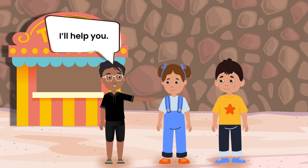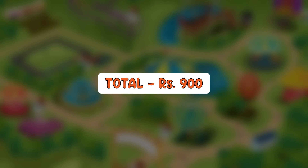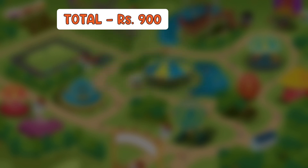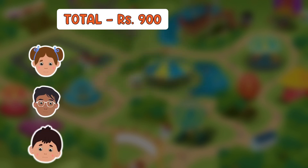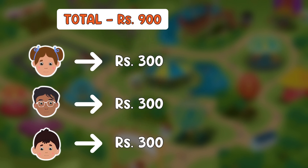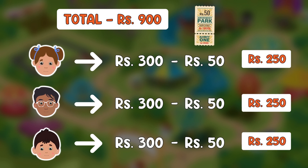Don't worry, Peter. I'll help you. We have a total of 900 rupees. If we divide it amongst us three, we'll each have 300 rupees. Now, we subtract the cost of the entry ticket from that. This means we can each spend 250 rupees.